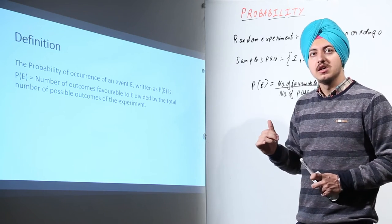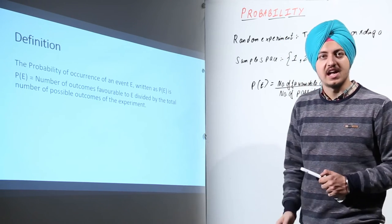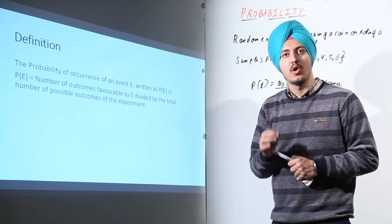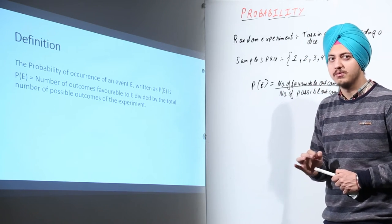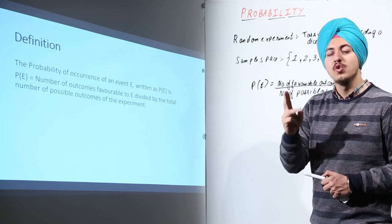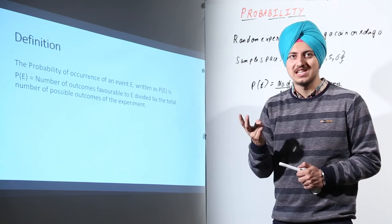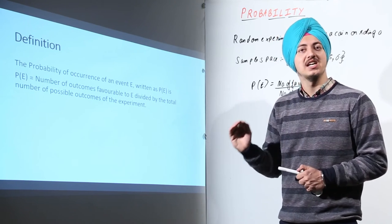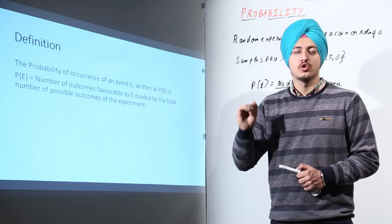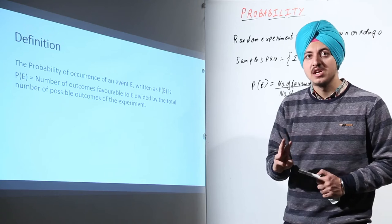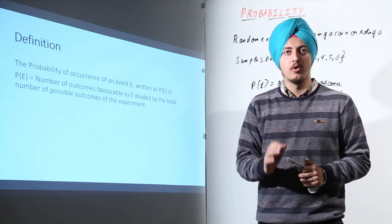Another example: while rolling a dice, find the probability of getting a number less than or equal to 3. Number of favorable outcomes are 1, 2, and 3 — because 1 is less than 3, 2 is less than 3, and 3 is equal to 3. So we have 3 favorable outcomes upon the total number of outcomes, which is 6. Therefore the probability is 3/6, which simplifies to 1/2.